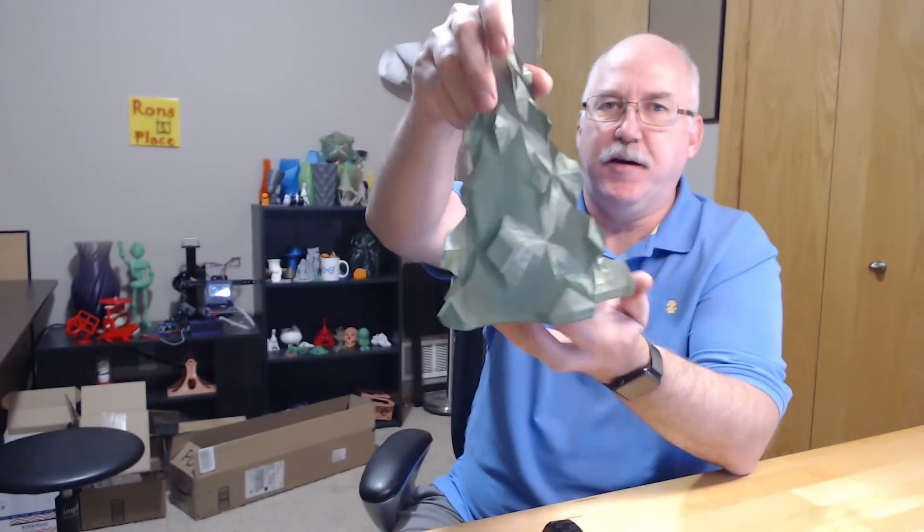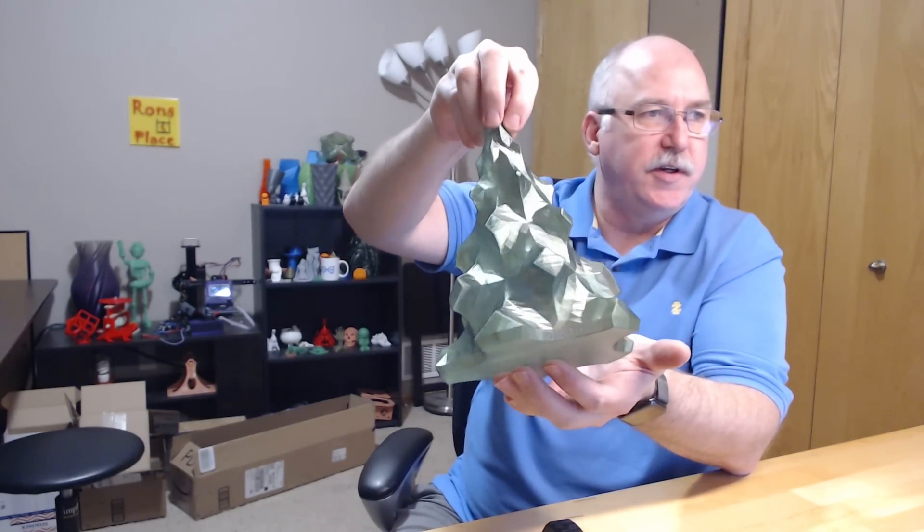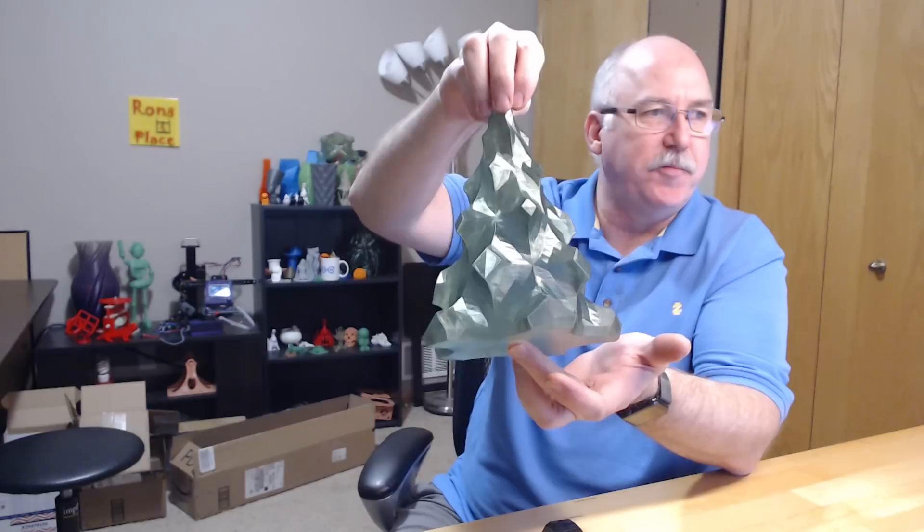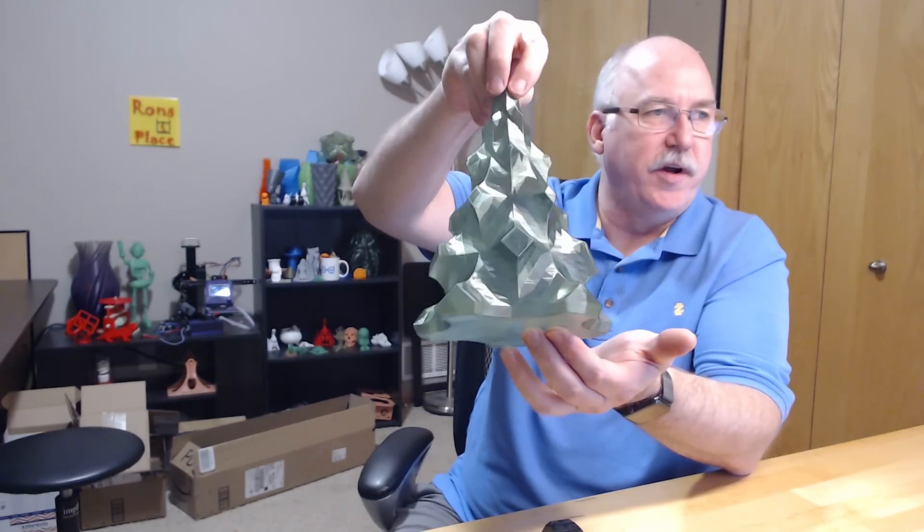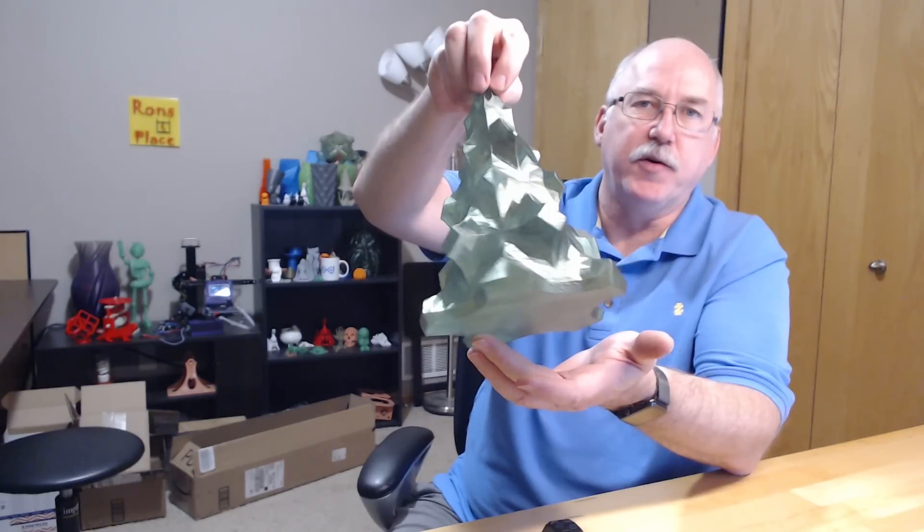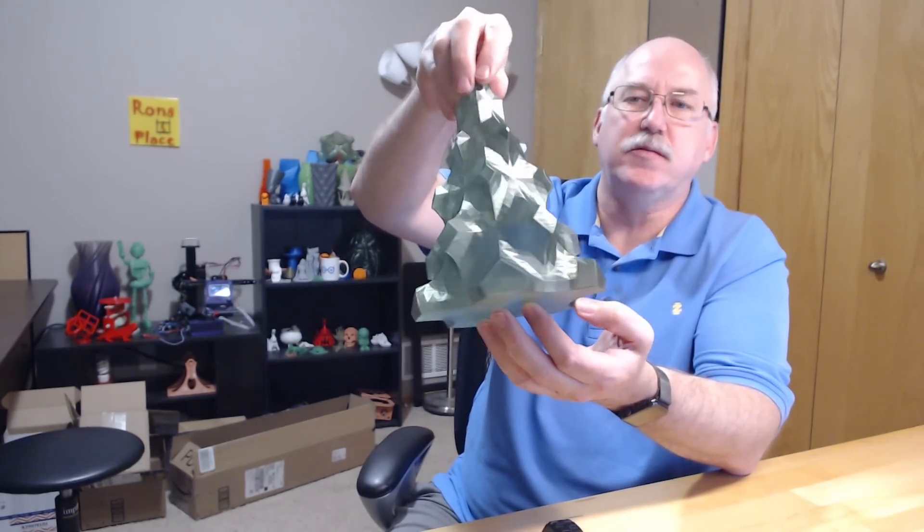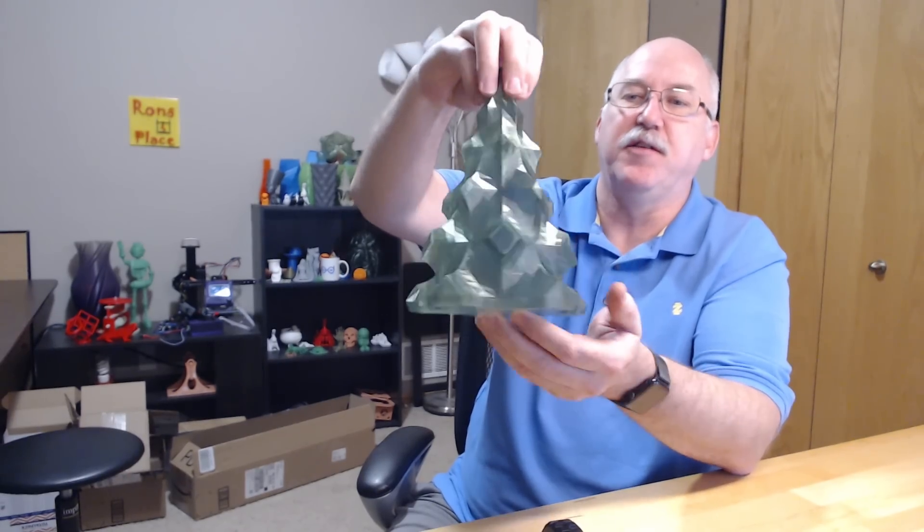Welcome back. I printed off a few different things. One, of course, is the same Christmas tree that almost everybody else seems to be printing. I just love the way it kind of shimmers, and this was done in Maker Geek Translucent Green. It's crystal, basically. It's clear, see-through.